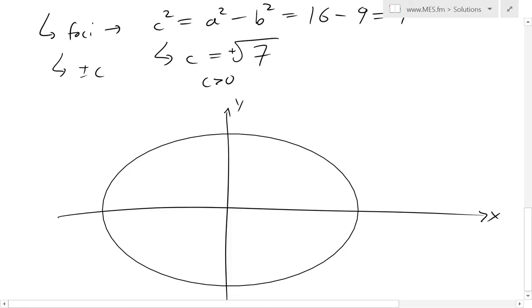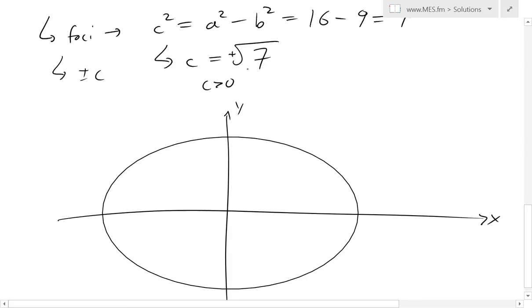Our c is plus square root of 7, or is this square root of 7, so basically this, we'll consider this as square root of 7. This is at square root of 7 and 0, and this is at negative square root of 7 and 0, and these are our foci points.